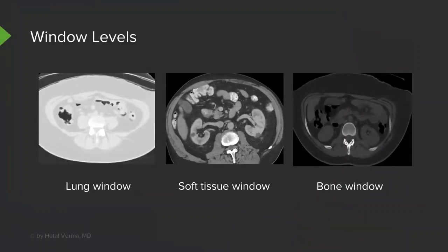Here is an example of three different types of window levels. On the left, we have lung windows, which create a very white appearance and are best for evaluating the lungs and for detecting free air. The middle is the soft tissue window, most commonly used to evaluate the solid organs of the abdomen. On the right is the bony window, used to evaluate bony structures. When reviewing a CT scan, I scroll through each of these windows because each one shows something different.